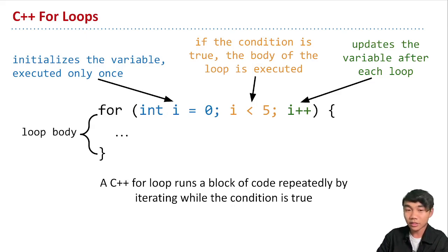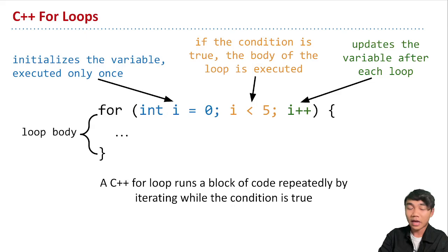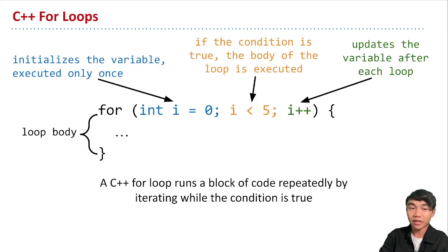We start by initializing i to some value. The condition, shown in orange, is what we use to control how many times we want our program to repeat doing something. The third part of the for loop is the update, shown in green — it updates the variable initialized at the beginning. After every time the loop body runs, the update statement executes and modifies that variable. In this case, we are incrementing i by one. The i++ syntax means we add one to i after every time the loop repeats.